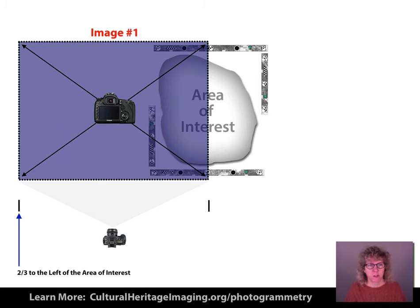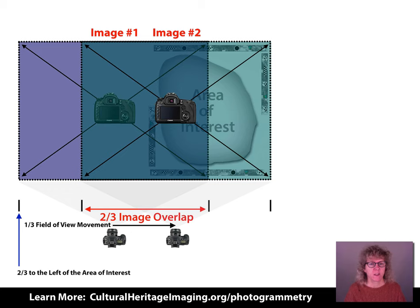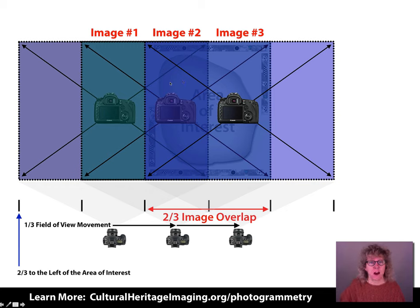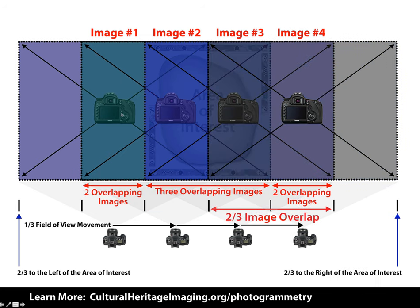We take our first picture starting two-thirds off to the left of our subject, with the camera in landscape mode. Then we translate the camera by one third, giving a two-thirds overlap. With the second image, the first third of the subject now has two cameras from geometrically different positions looking at that location. We continue completing the row — however many shots it takes — with two-thirds overlapping images until we're two-thirds past the edge of the area of interest. This ensures that all of our area, including the scale bars, has three overlapping images for that row.